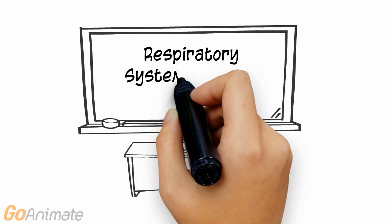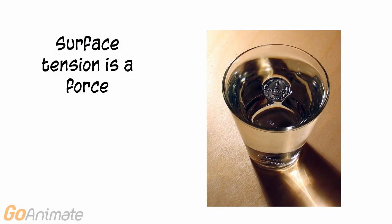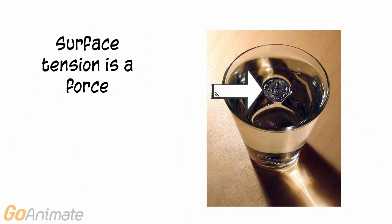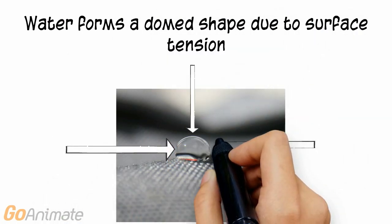Let's learn about surface tension. Surface tension is a force that can be produced by water molecules. This coin doesn't sink because it is held up by surface tension. Water forms a domed or droplet shape due to surface tension.